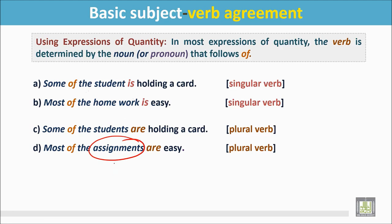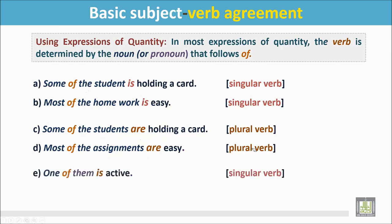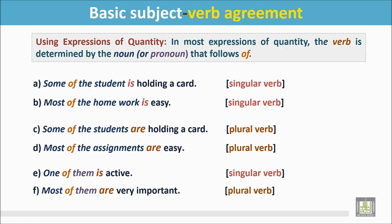In that sentence, 'assignments' follows 'of' and is a plural number, so the verb is 'are' — a plural verb. Number E: One of them is active. Here the sentence begins with 'one,' and even though the pronoun 'them' is plural, due to 'one,' the verb should be singular: 'is.' Number F: Most of them are very important. The sentence begins with 'most,' which expresses plural quantity, so the verb is plural: 'are.'